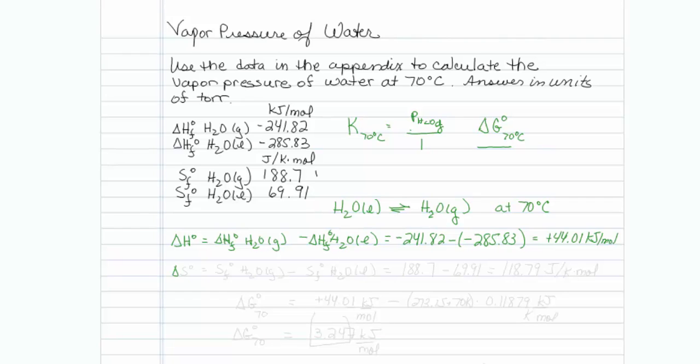Now I need to figure out delta S, which is going to be my entropy of formation of H2O gas minus my entropy of formation of H2O liquid. So I will take 188.7 minus 69.91. And this value comes out to be 118.79, and this should be in units of joules per Kelvin mole.